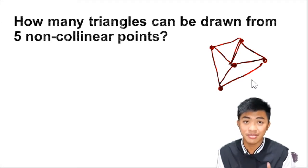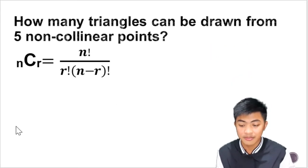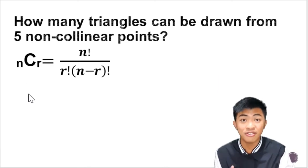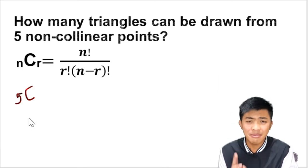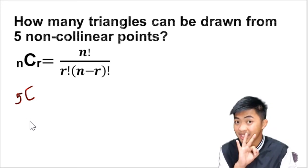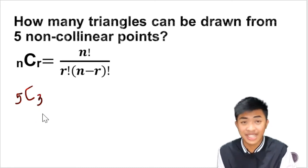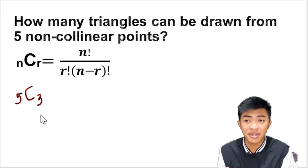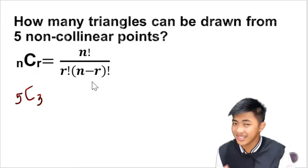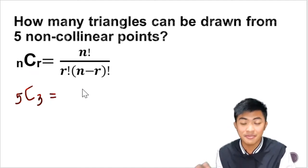So actually this is a combination problem. Let's input this in the combination formula. So nCr: n is the number of points, so there are five points. And how many points do you need to form a triangle? We're going to substitute three in place of r. That's how many points you need to draw a triangle. So I hope that's clear.